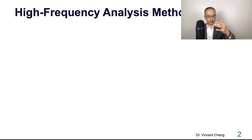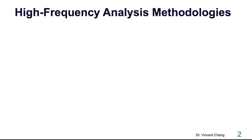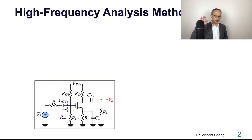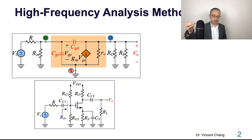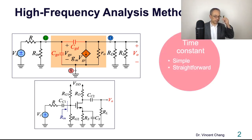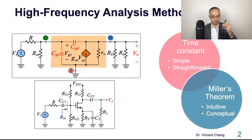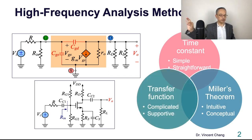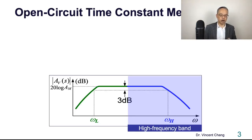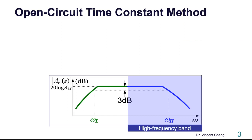So let's quickly review what we talked about before, which is the high frequency analysis methodology. High frequency equivalent circuit on the top where two capacitors are included: CGS and CGD. So three ways to solve this: time constant method, open circuit time constant method (simple and straightforward), Miller's theorem, and the last one is the transfer function derivation. So now this lecture, we are going to focus on the first approach, which is the open circuit time constant method.